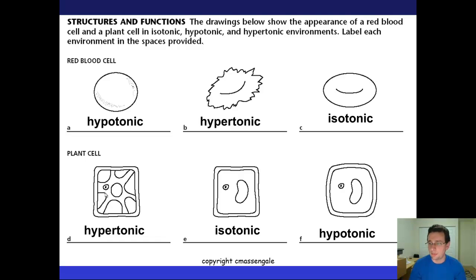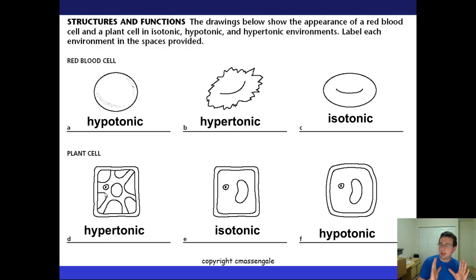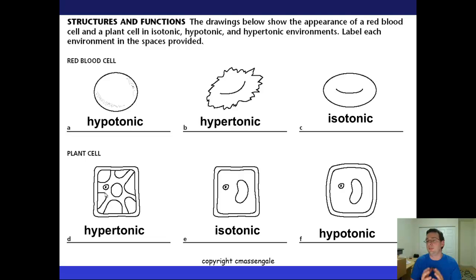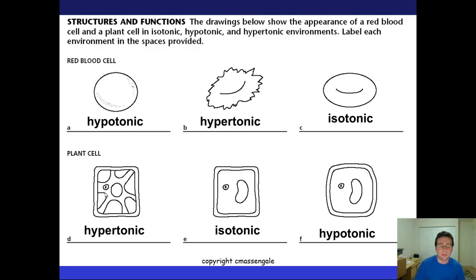Which environment is best for each cell type? For an animal cell, you don't want the cell popping or shriveling, so an isotonic solution is best. For plant cells, it's better to have a full vacuole because plant cells need water for photosynthesis constantly. So plant cells prefer to be filled with water — a slightly hypotonic environment makes plant cells happy. That means throwing salt around a plant is a problem because it puts the plant in a hypertonic environment. Plants living in salty environments need special adaptations to protect their cells.